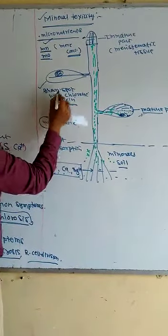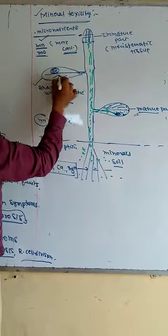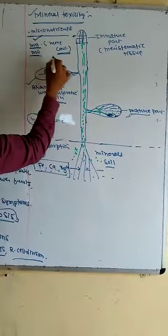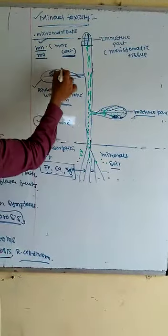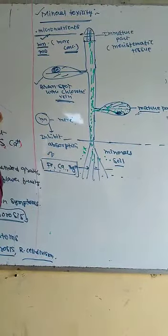For example, manganese. It shows the brown spot with the chlorotic vein on the leaves, and you can see that the amount of concentration is increased because it is a micronutrient. But at the same time,